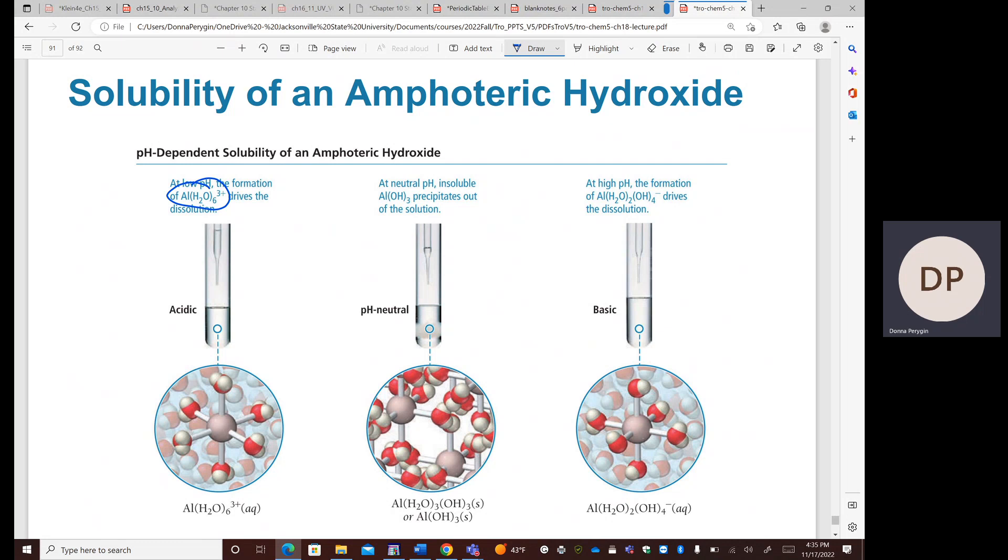In acidic solution, the aluminum forms this complex with water. It's going to increase the solubility of the aluminum in water because of the complex. So at low pH, this complex forms.